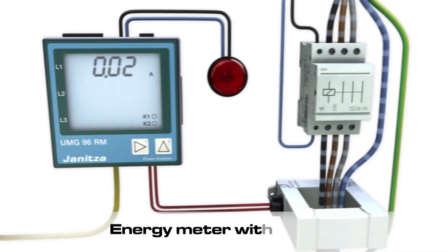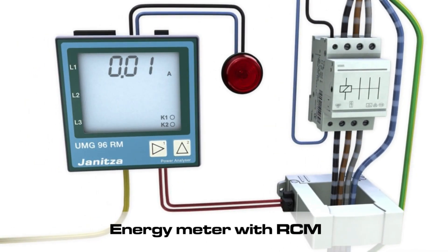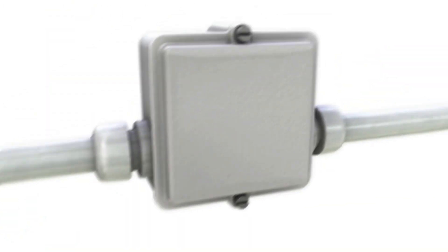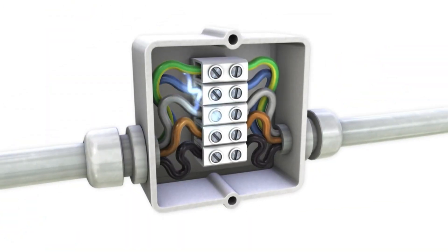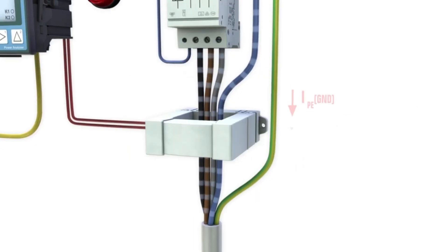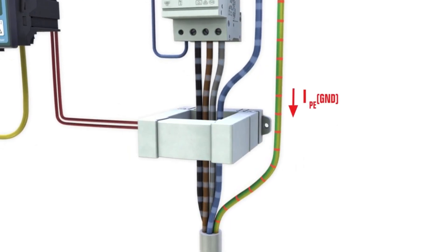Utilize existing infrastructure and extend your system with residual current monitoring. That is how you will reliably identify beginning insulation faults long before they are noticed as disruption or in extreme cases result in fire.